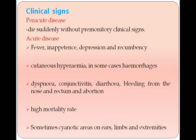There are four forms of disease: inapparent infection, per-acute, acute, and chronic. In per-acute cases, the pig dies without showing any prominent clinical signs. Acute disease is manifested by fever, inappetence, depression, recumbency, cutaneous hyperemia, and in some cases hemorrhages. Dyspnea, conjunctivitis, diarrhoea, and bleeding from the nose and rectum may occur. Pregnant pigs abort; mortality rate is very high. Cyanotic areas can develop on the ears, limbs, and extremities.